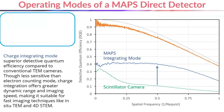However, the charge each electron deposits in a MAPS sensor is variable, and this creates a source of noise called Landau noise. To overcome Landau noise, microscopists developed a second mode of operation for MAPS detectors: electron counting.